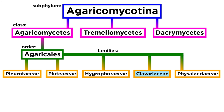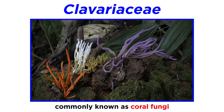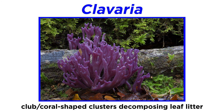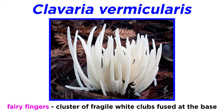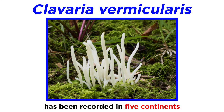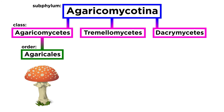The last family in this tutorial will be Claveriaceae, commonly known as coral fungi. There are a number of genera in the family, but let us focus on the genus Claveria. Fungi in this genus produce fruiting bodies forming club or coral-shaped clusters. You will find these saprobic mushrooms decomposing leaf litter and other organic material on the forest floor. Claveria vermicularis, commonly called fairy fingers, is the type species of the family. The species forms clusters of fragile white clubs fused at the base, and has been recorded in five continents, common in old grasslands in Great Britain and along the forest floor in North America.